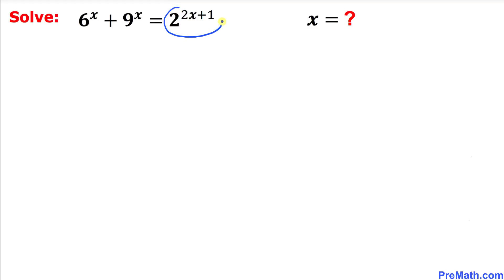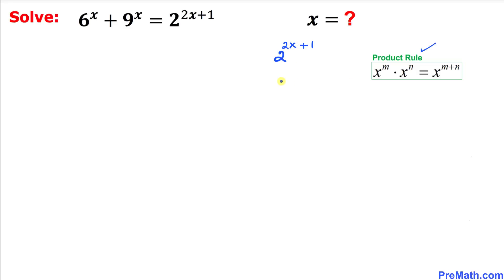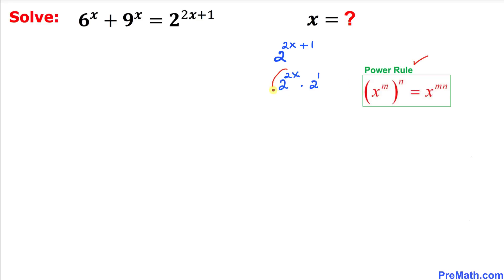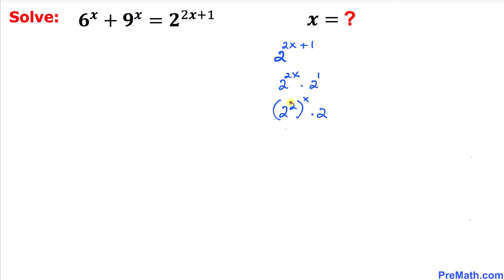Let's focus on the right-hand side. Recalling the product rule, we can write 2^(2x+1) as 2^(2x) times 2^1. Now applying the power rule, we can write 2^(2x) as (2^2)^x, which equals 4^x. And 2^1 is just 2. So 2^(2x+1) becomes 4^x times 2.